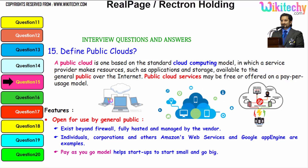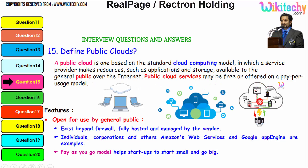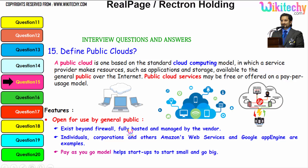Moving further towards the public cloud definition: a public cloud is one based on the standard cloud computing model in which the service provider makes resources such as applications and storage available to the general public over the internet. Public cloud services may be free or offered on a pay-per-usage model. The features of public cloud: it is open for use by the general public, it exists beyond the firewall, and is fully hosted and managed by the vendor. Web services and Google App Engine are typical examples.